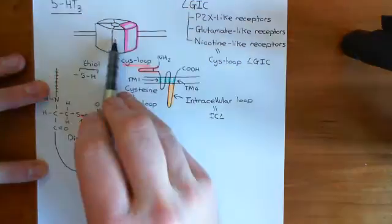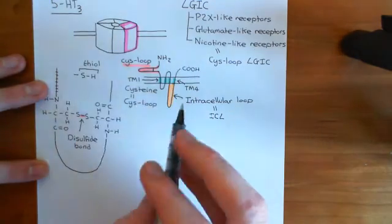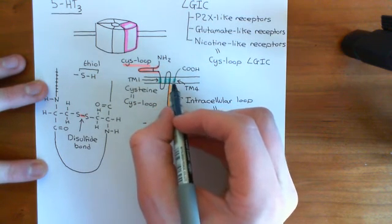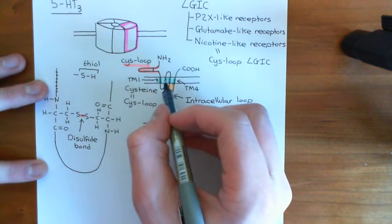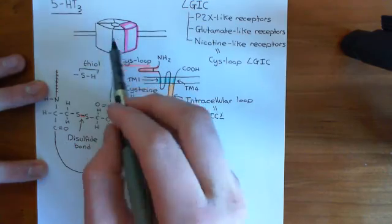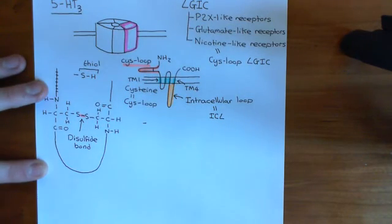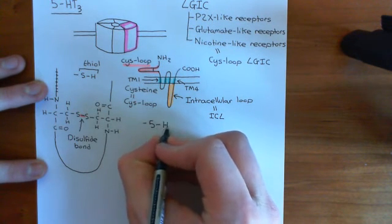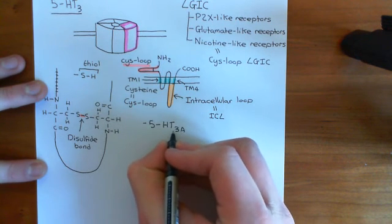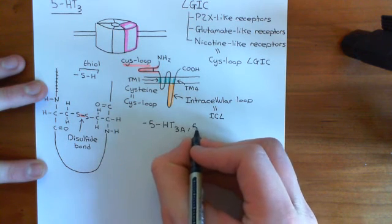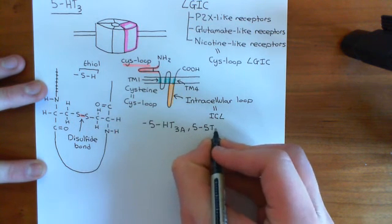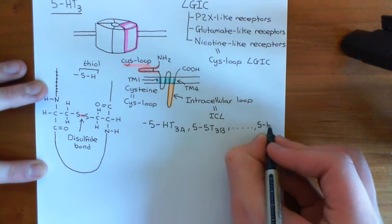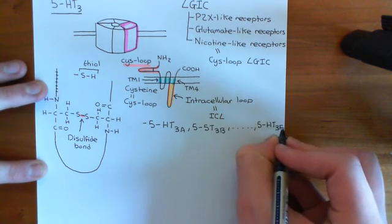So, the 5-HT3 receptors are pentamers, and their subunits look like this. How many different types of subunits of 5-HT3 receptors are there in humans? You have five known genes for 5-HT3 receptor subunits: the 5-HT3A gene, the 5-HT3B gene, and corresponding subunits, going all the way down to 5-HT3E — giving us five subunit genes in total.